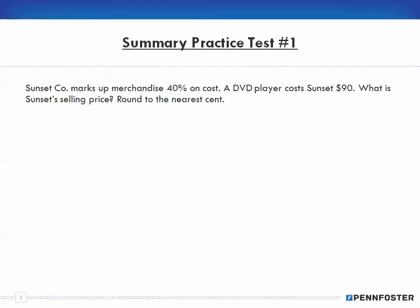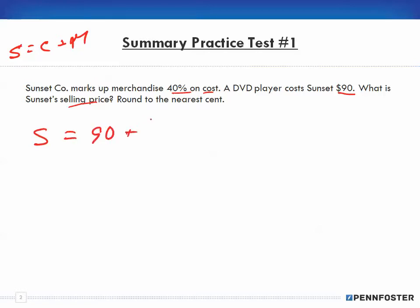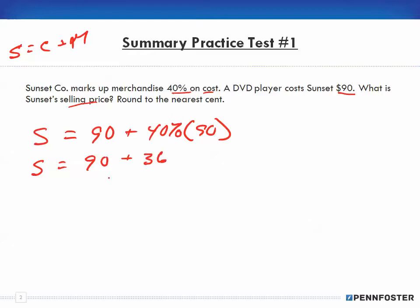Question number one: A Sunset Company marks up merchandise 40% on the cost, and the DVD player costs $90. What is Sunset's selling price? Selling price is equal to the cost plus the markup. Our cost is $90 and the markup is 40% of $90. So selling price is $90 plus 40% of $90, which is $36.